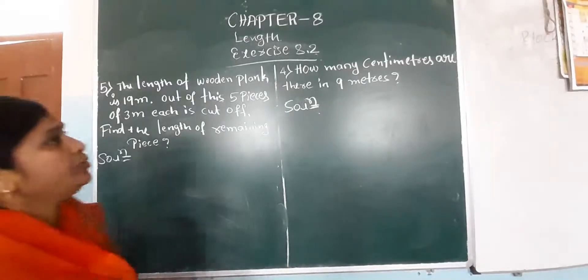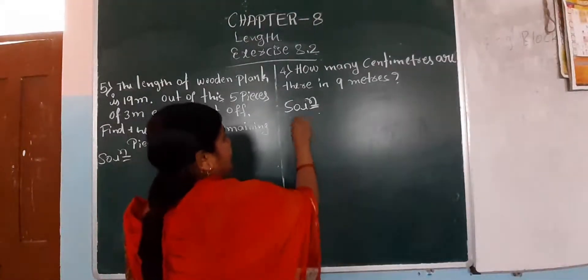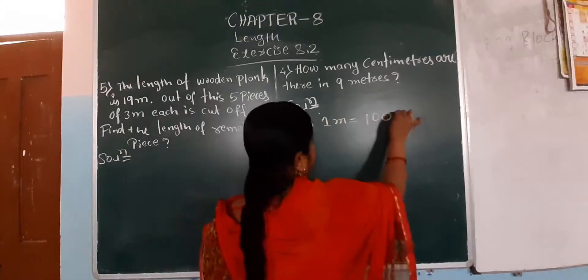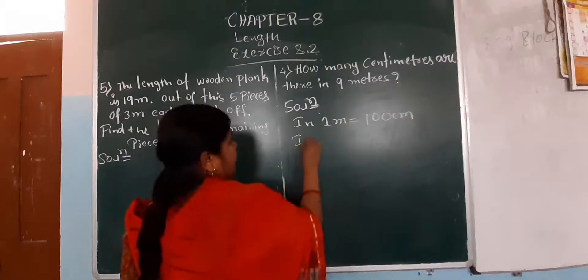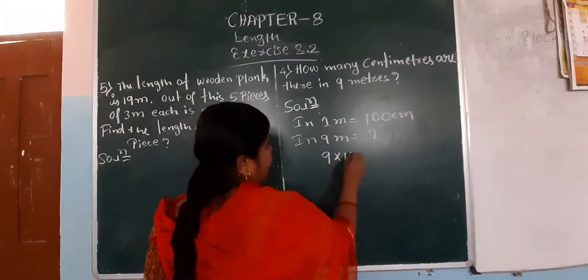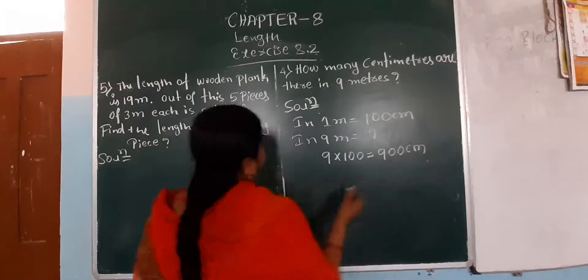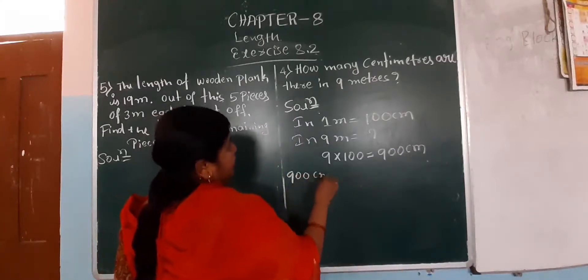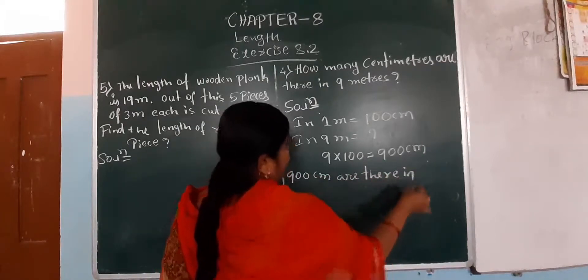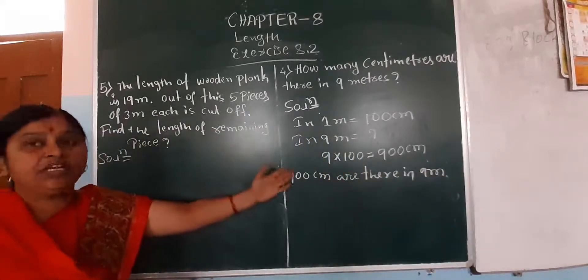Fourth one: how many centimeters are there in 9 meters? In 1 meter there are 100 centimeters. So in 9 meters: do the multiplication, 9 into 100 equals 900 centimeters. There are 900 centimeters in 9 meters. We are converting meter to centimeter.